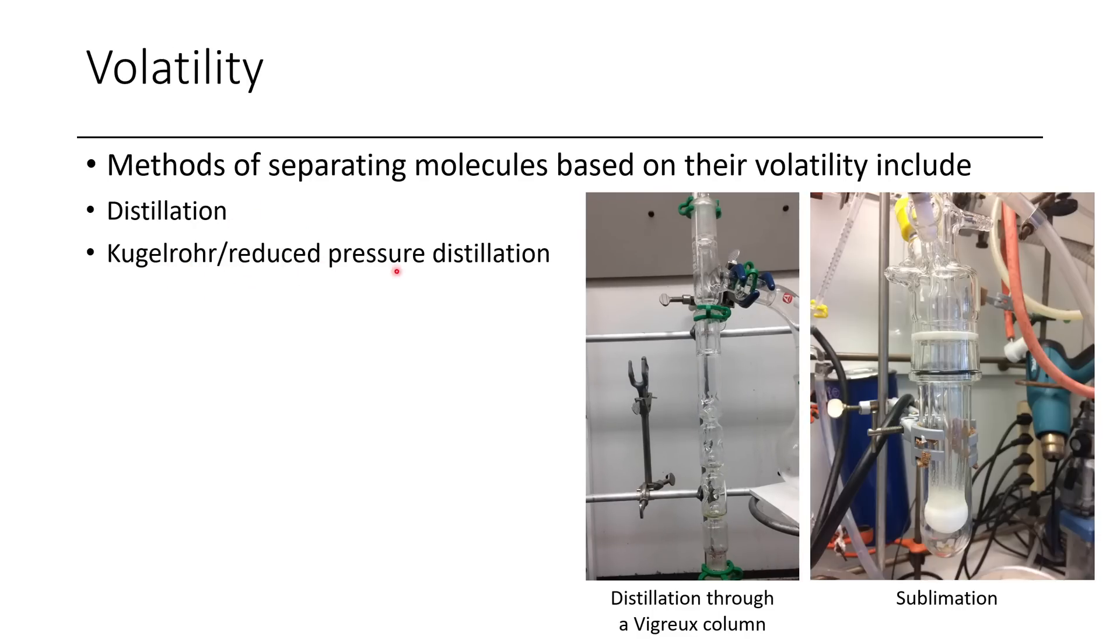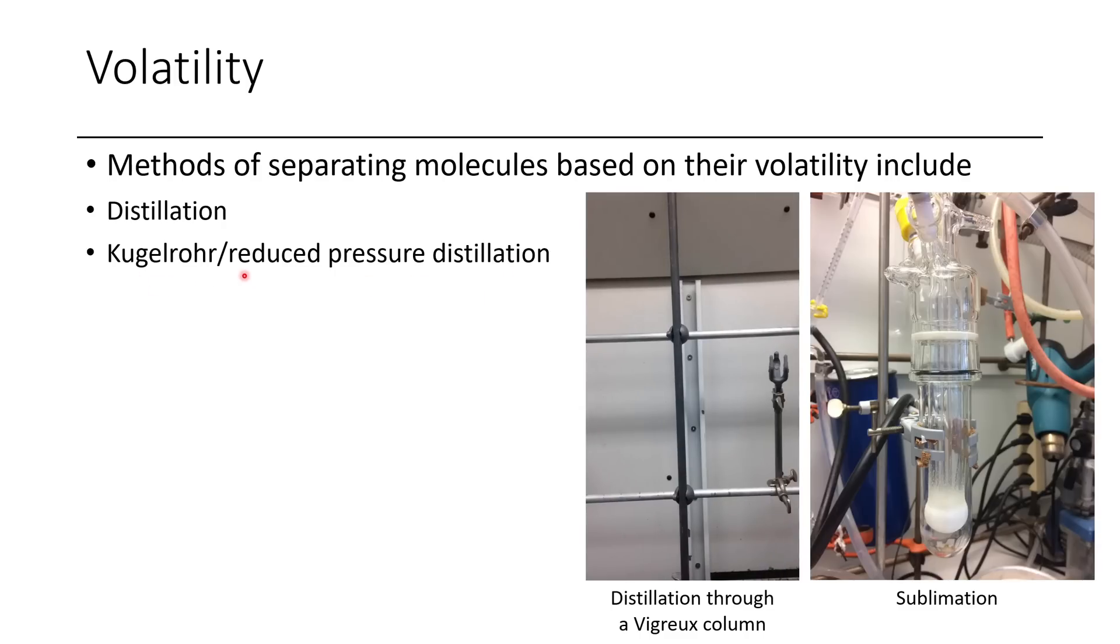Another method is to do kugelrohr or reduced pressure distillation. A kugelrohr is a specialized apparatus used for isolating these compounds, such as viscous oils that are not relatively volatile, but they are still volatile enough that if you get a low enough vacuum, you can do a trap-to-trap distillation.